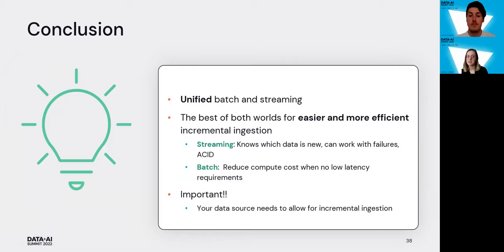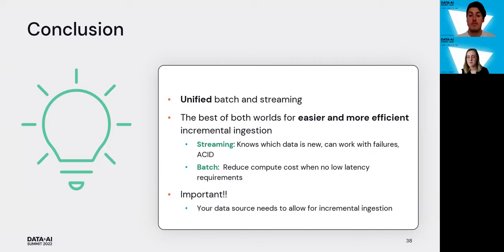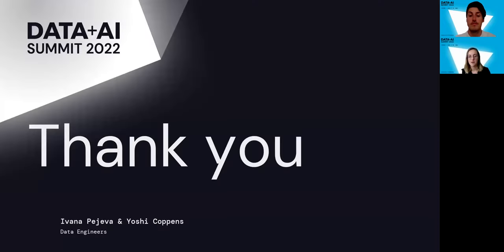We can now easily unify batch and stream — getting the best of both worlds for easier and more efficient incremental ingestion. With streaming, we know which data is new, can work with failures easily, and have ACID transactions. With batch, we can reduce compute costs when no latency requirement is set. Important to note: your data source needs to allow for incremental ingestion with a version column or update timestamp. Thank you for your attention.